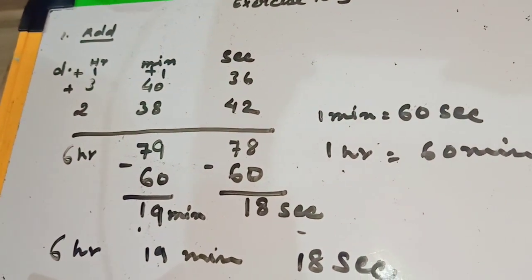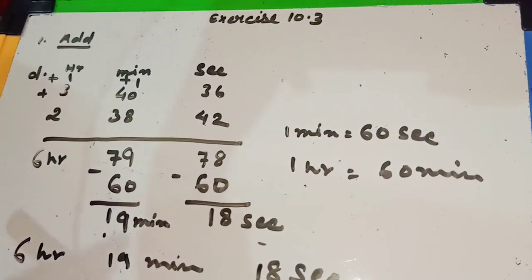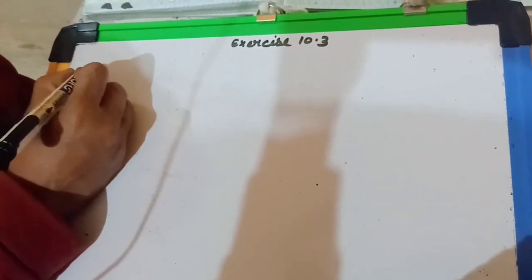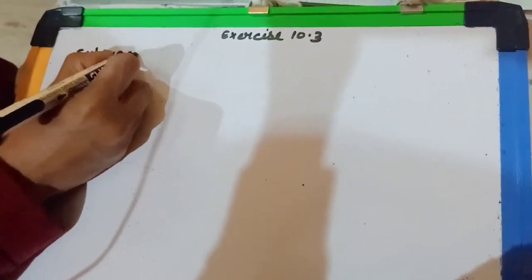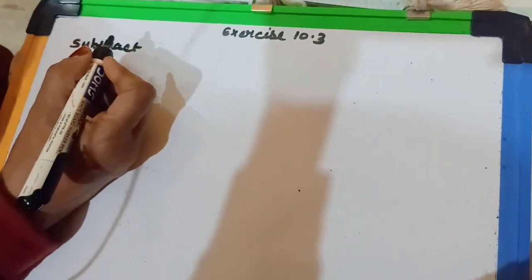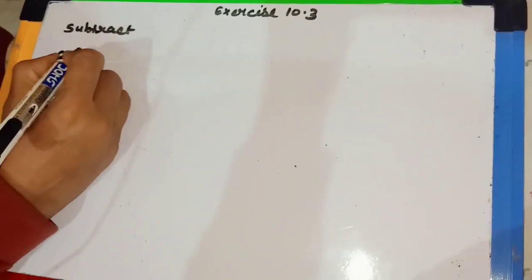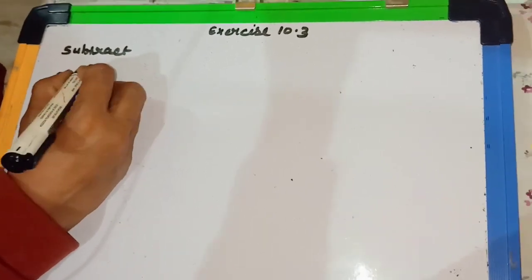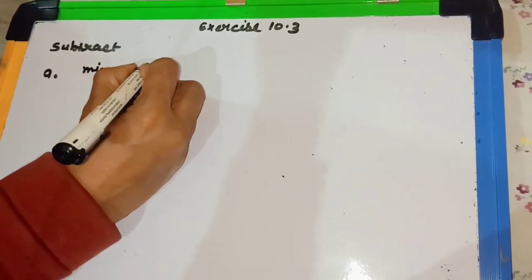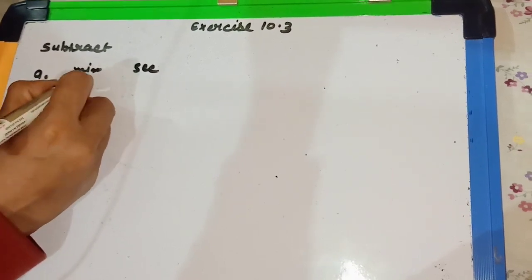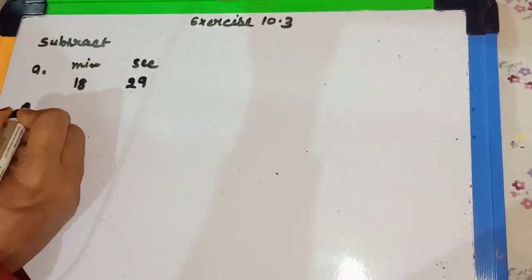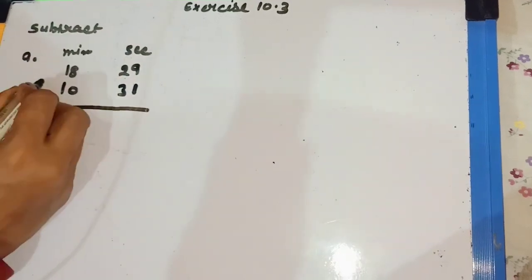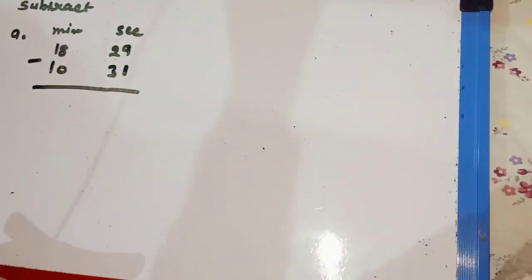By this process you can do question numbers E and F easily. Now the second topic is subtraction. Look at question number A: 18 minutes 29 seconds and 10 minutes 31 seconds. We arrange first: minute, second. You write 18 minutes 29 seconds minus 10 minutes 31 seconds and put the subtraction sign.